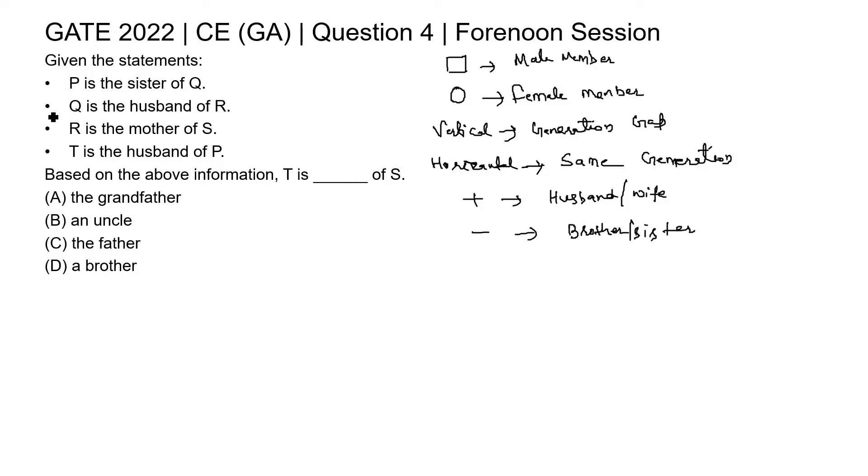Now, coming to this question, P is the sister of Q. Sister means P is female member and sister of Q. Q is the husband of R. Q is the husband, it means Q is male member, Q is the husband of R.